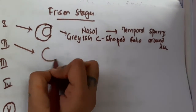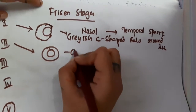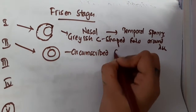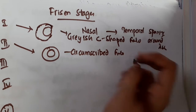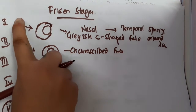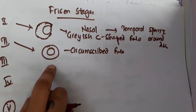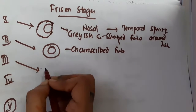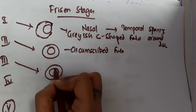In stage two, the complete disc is involved, so all sides are involved and a circumscribed hollow is seen — that is, complete obscuration of the disc. In stage one there is obscuration of the nasal border of the disc, and in stage two there is complete obscuration. In stage three, there is circumferential hollow and obscuration along with vessels in the optic disc.